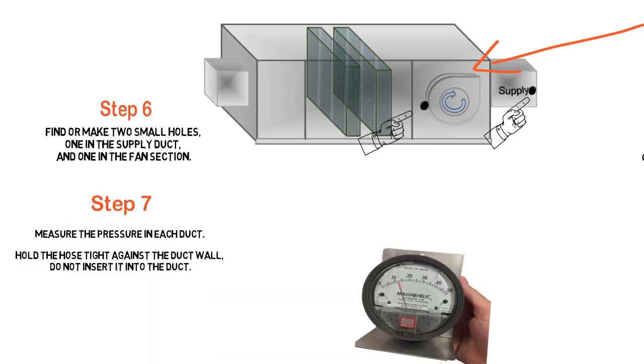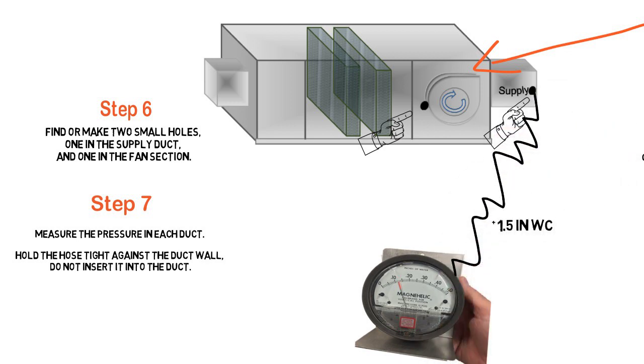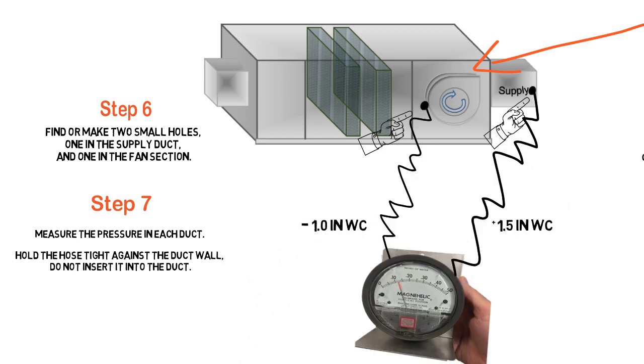Now we're actually going to measure the static. We're going to take our magnehelic. We're going to hold the tube up against the supply duct, hold it against it tight. And in this case, we have a positive 1.5 inch reading. And then we're going to check the return. And in that case, we had a 1 inch reading.